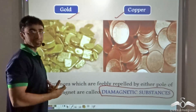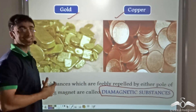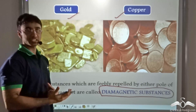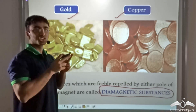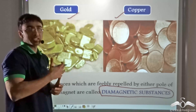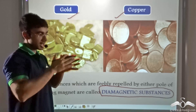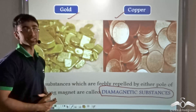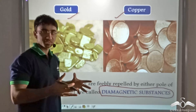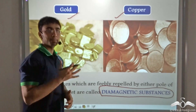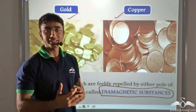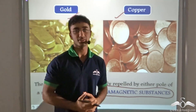So based on the behavior with which they interact with the magnet, substances can be classified under three categories: ferromagnetic or simply magnetic substances, paramagnetic substances, and diamagnetic substances.